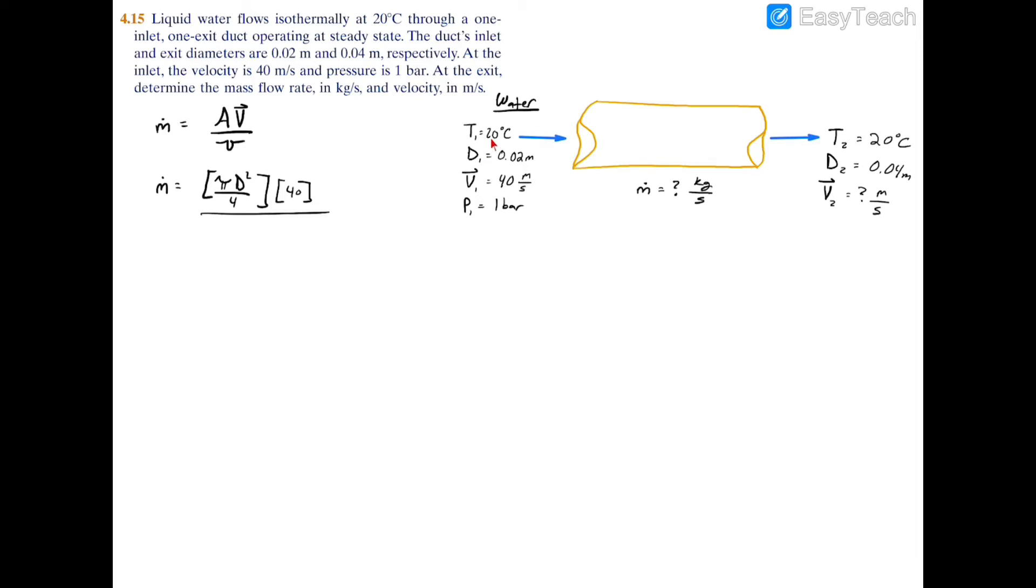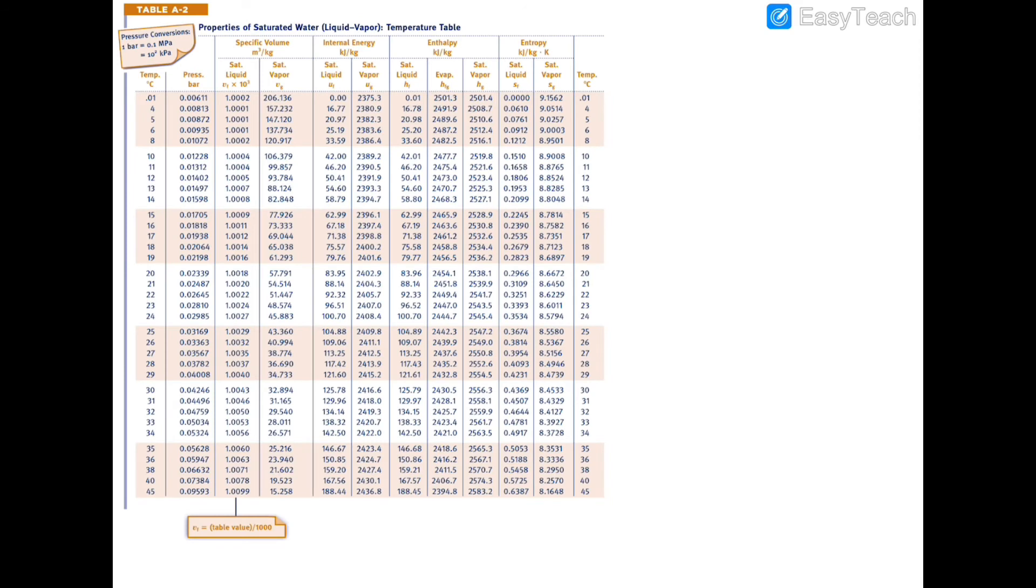We're going to have to get the specific volume from the property table. If we go to 20 degrees Celsius and one bar on the properties table, we can turn to table A2, which is the saturated table. At 20 degrees Celsius, we see that the saturation pressure is 0.02339.